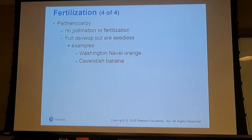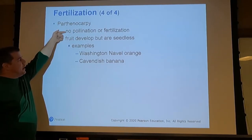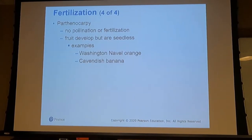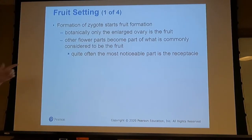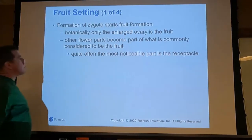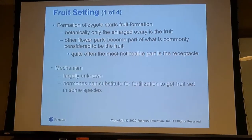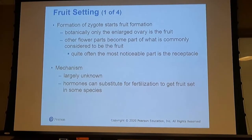Parthenocarpy is where a fruit develops without being pollinated or fertilized, so there are no seeds. Once the zygote starts to form, fruit begins. The enlarged ovary is actually the fruit, and the other flower parts become what is commonly considered the fruit. The mechanism is largely unknown, but hormones can substitute for fertilization to get fruit set in some species.